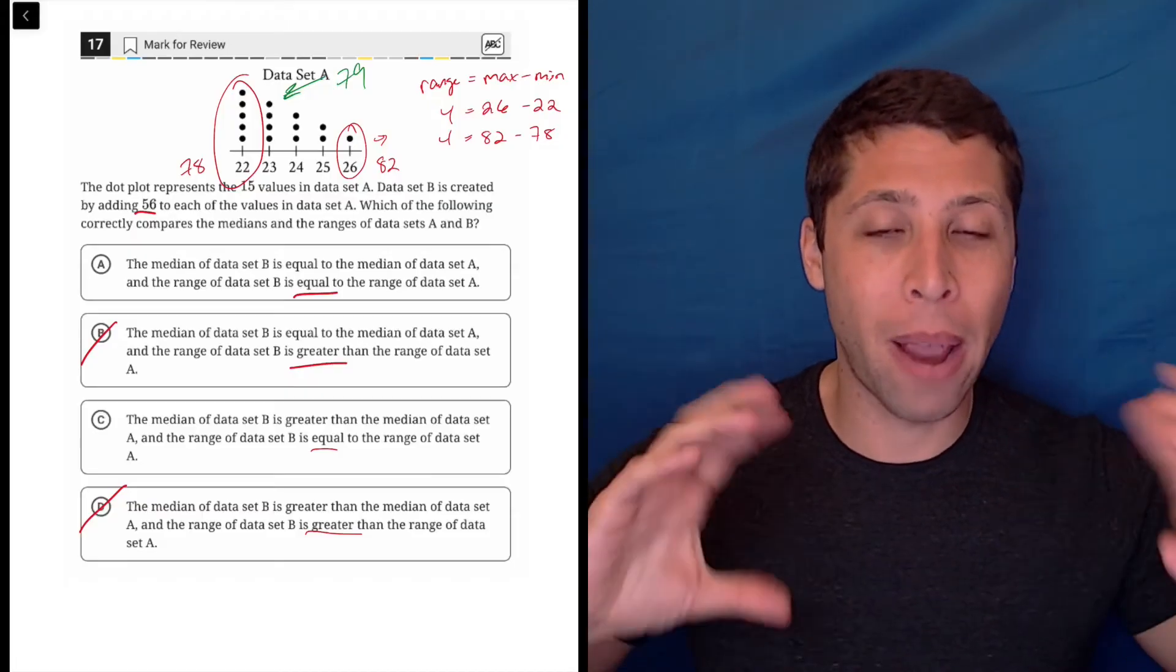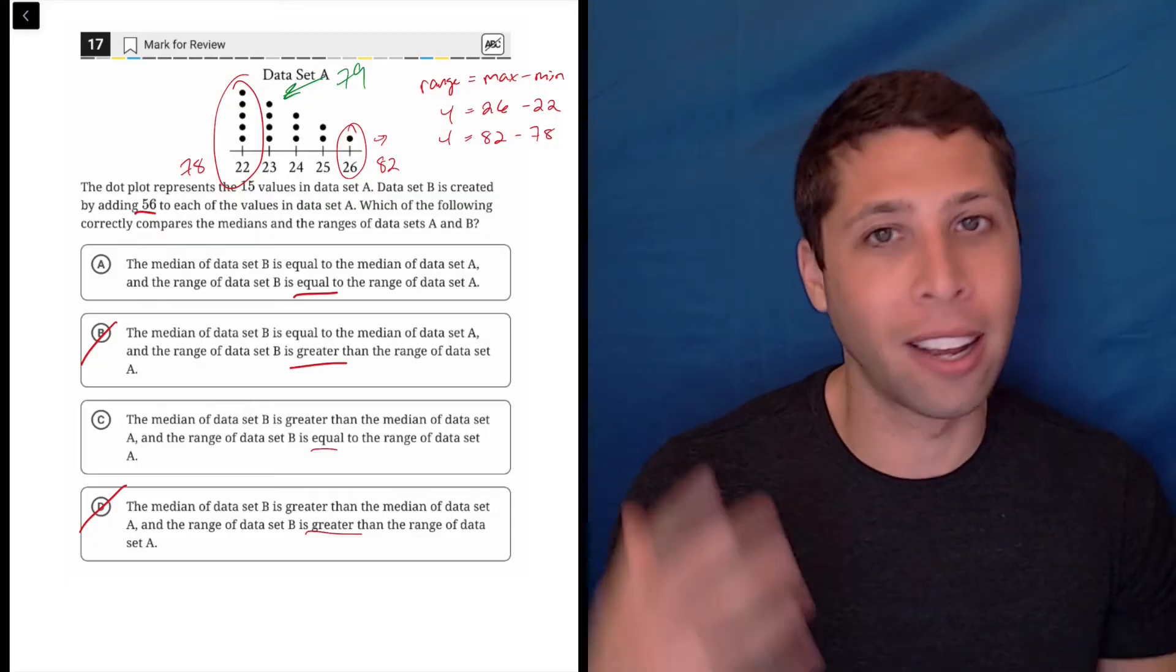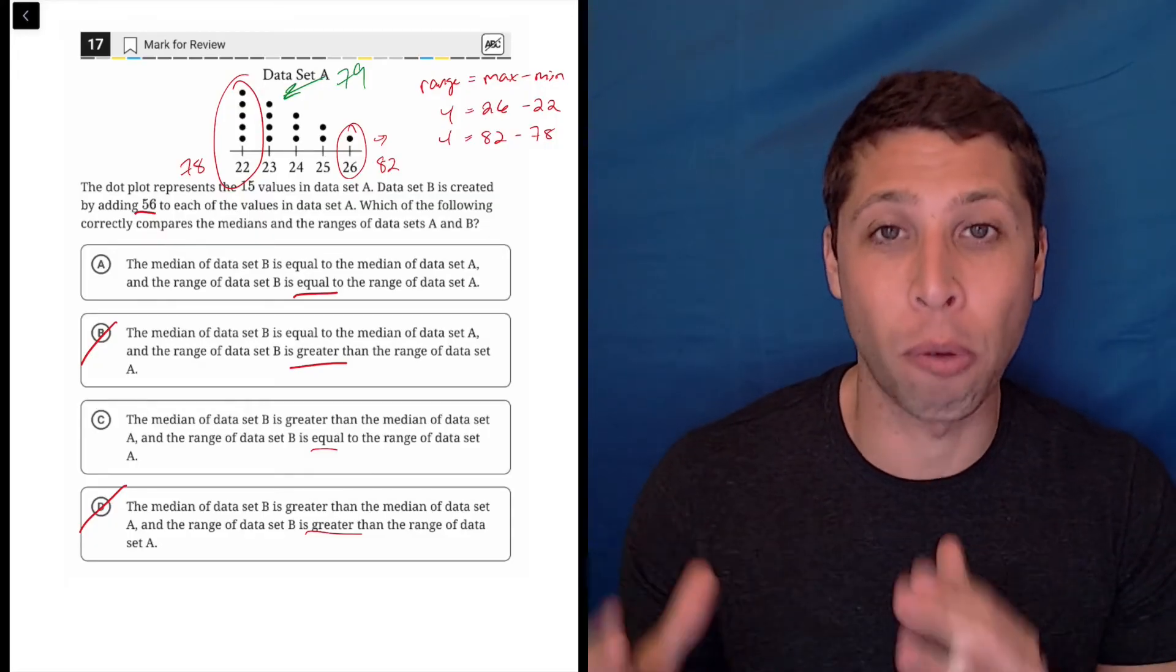Whereas the range is kind of the comparison between two data points. And if they both move, then it's going to keep that comparison the same. They're relatively the same.